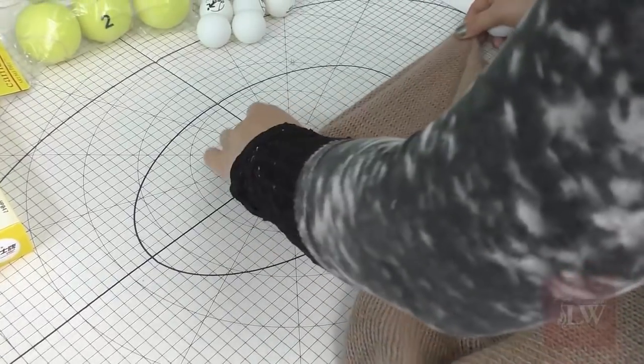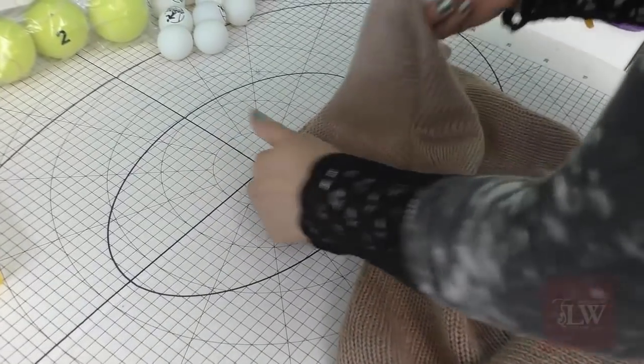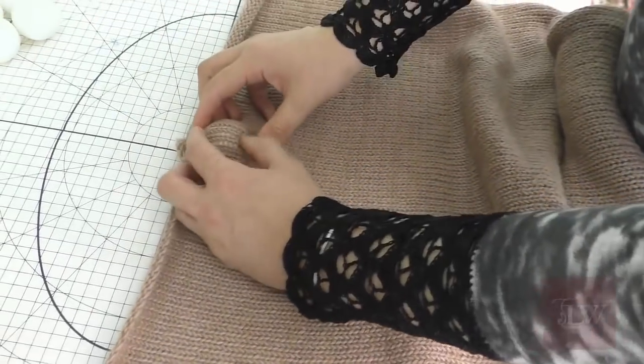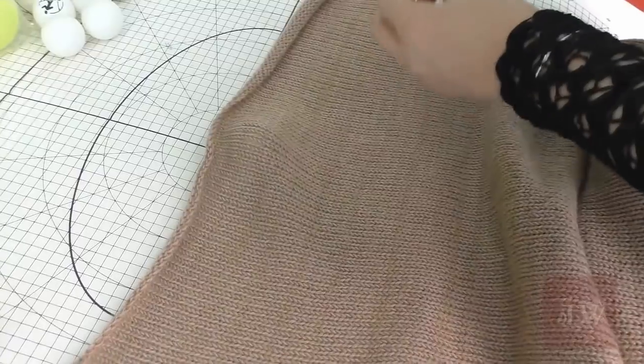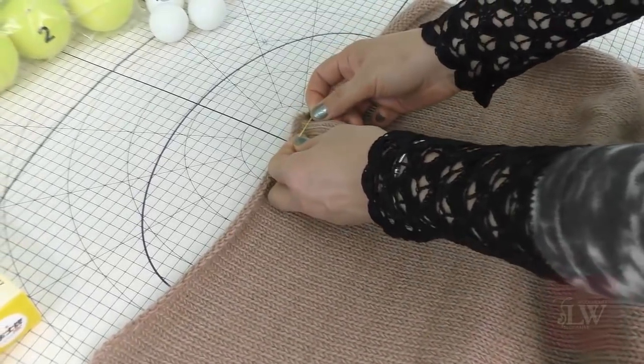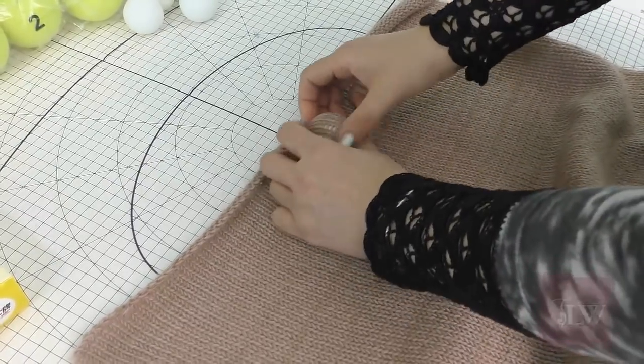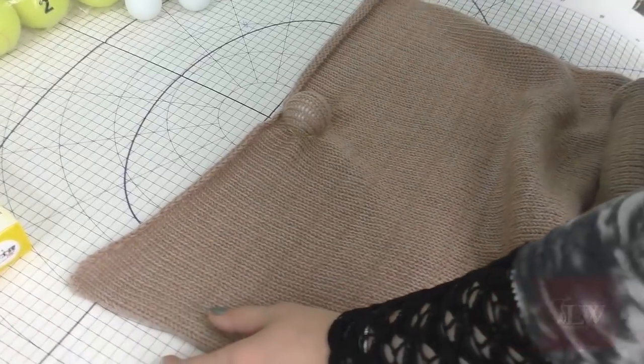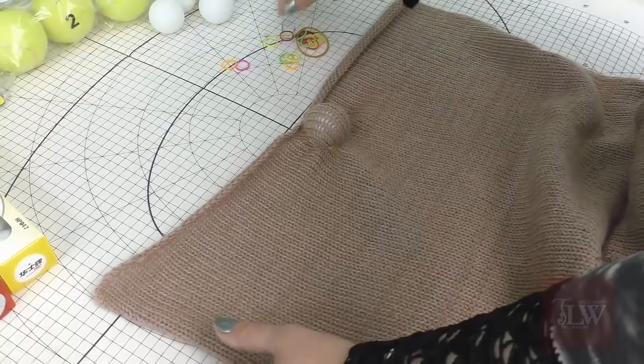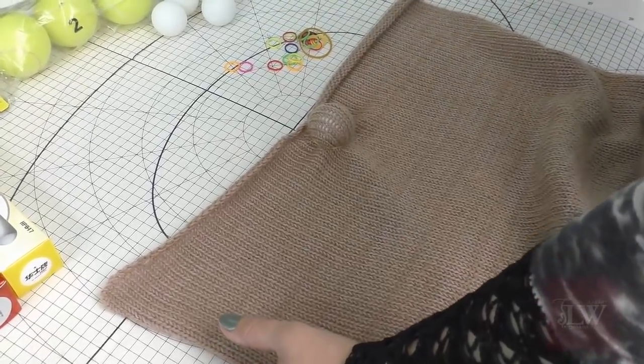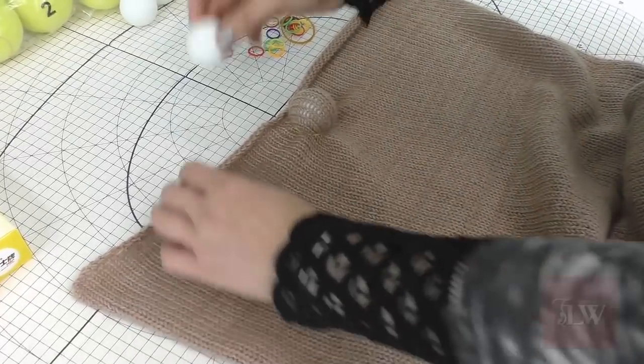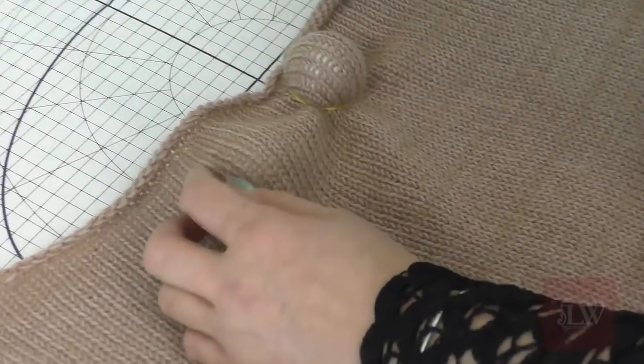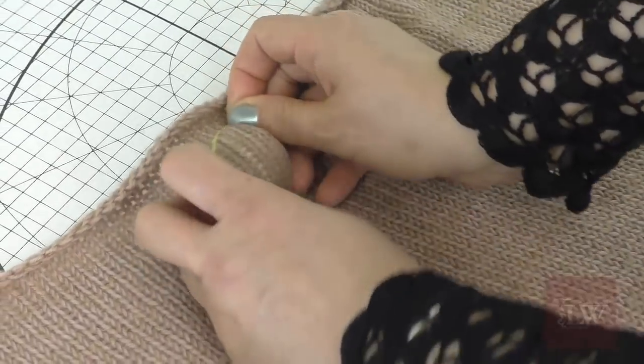I'm using this grid to position my balls evenly, but if you don't have the grid you can use just a regular ruler and chalk to mark the spots where you want to put the balls. Then I'm using tiny rubber bands to fix the balls in place. These tiny rubber bands I use to tie little pigtails for my dogs, but here I'm gonna use them to fix these little balls in place.